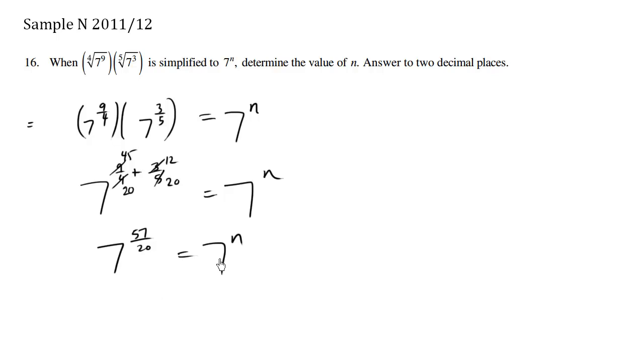Now, we have the same base as 7, so we're allowed to actually make the exponents equal. So we're going to say n equals 57 over 20.